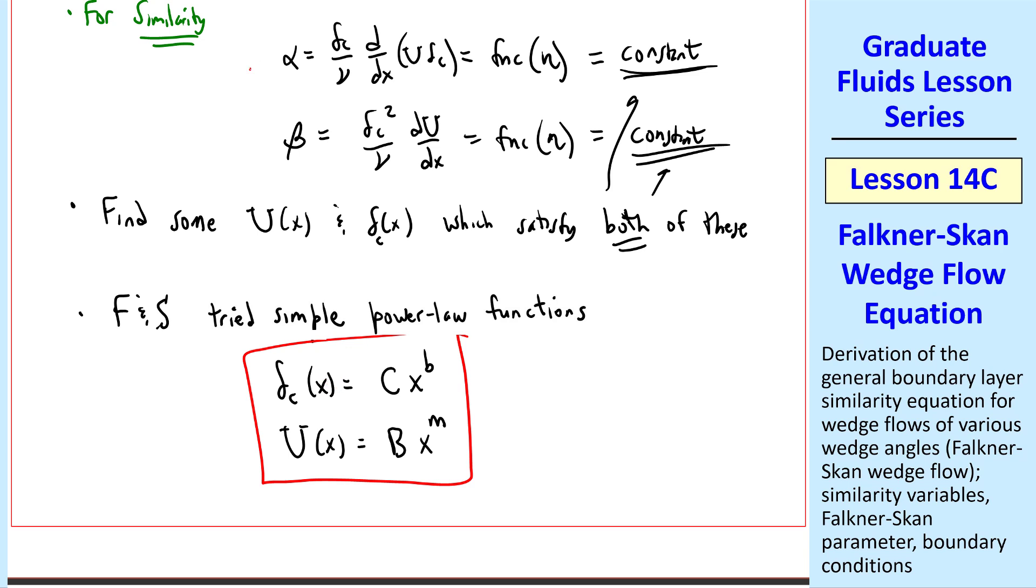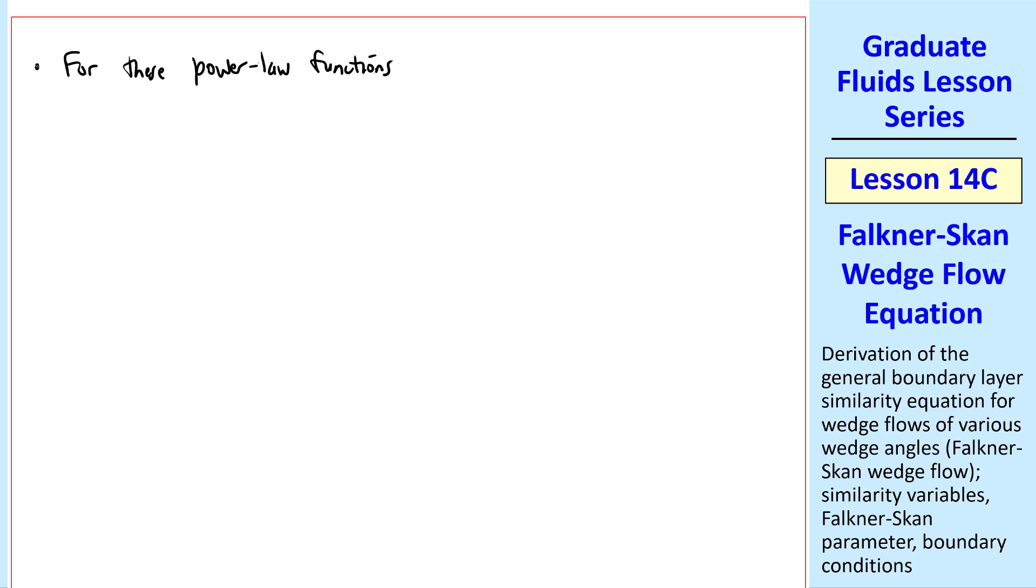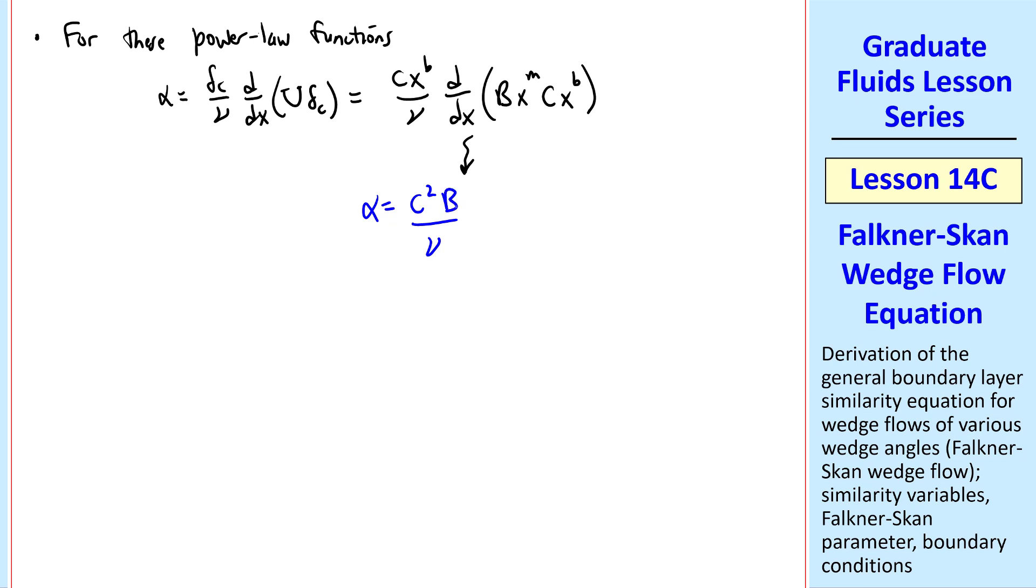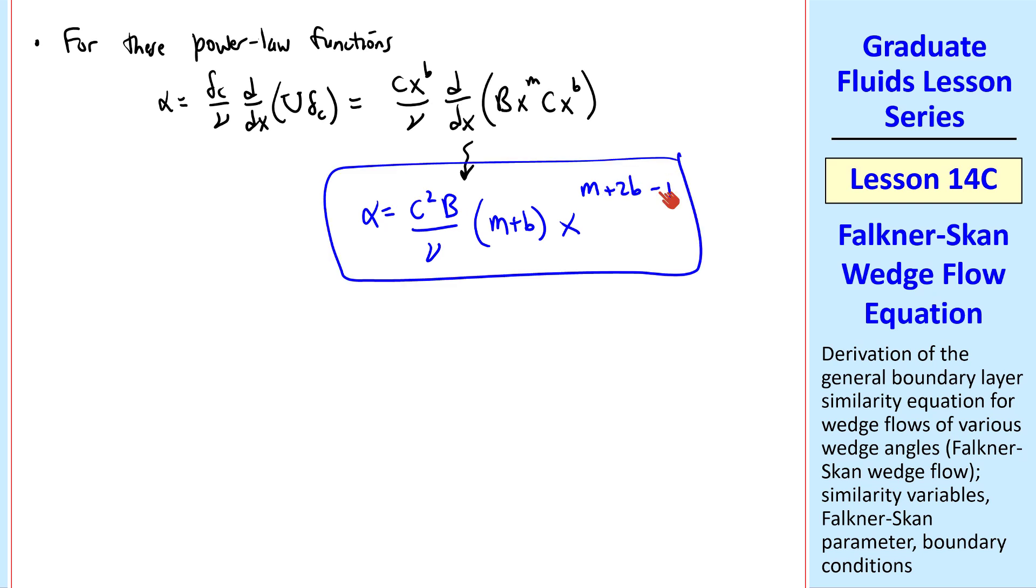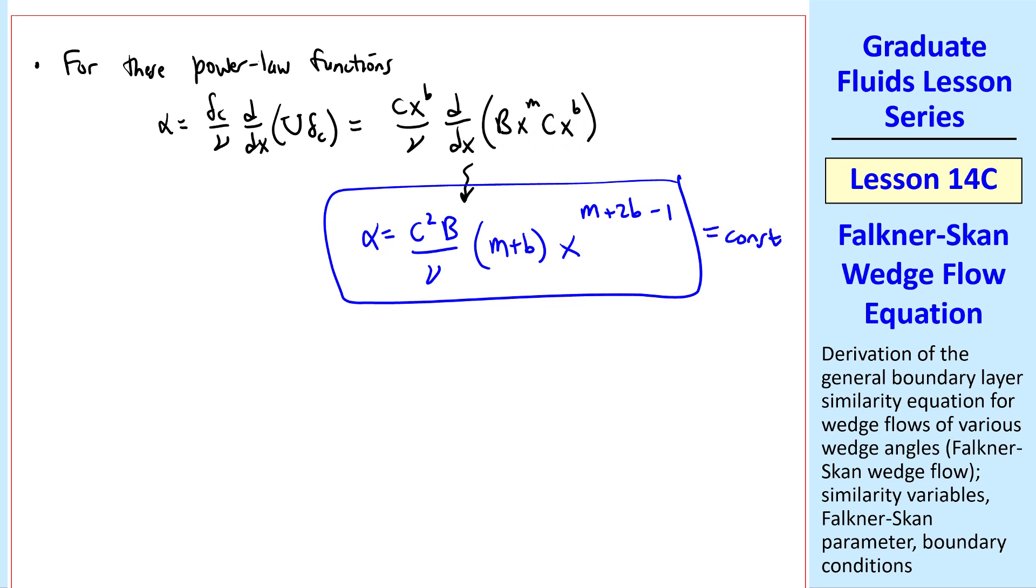Now we plug these into our expressions for alpha and beta. So for these power law functions, alpha becomes c x to the b over nu, d dx of B x to the m, c x to the b. And doing a little bit of algebra on that, taking the constants out, we get alpha equals c squared B over nu, m plus b, x to the m plus 2b minus 1. And the 1 comes by differentiating this.